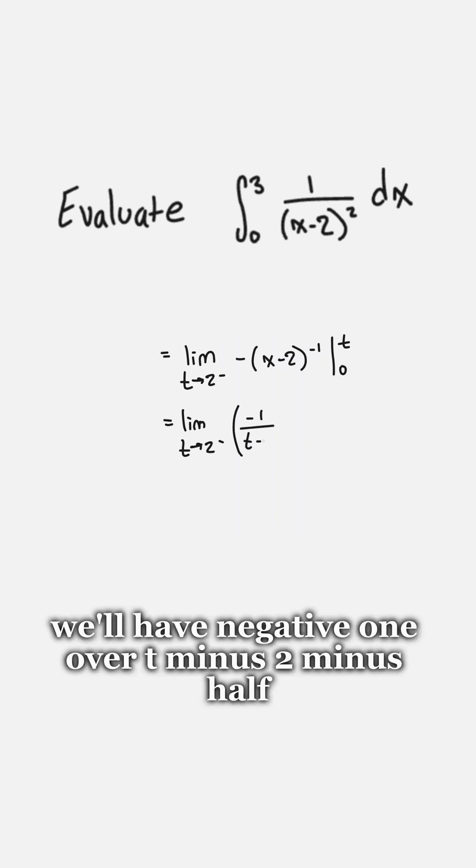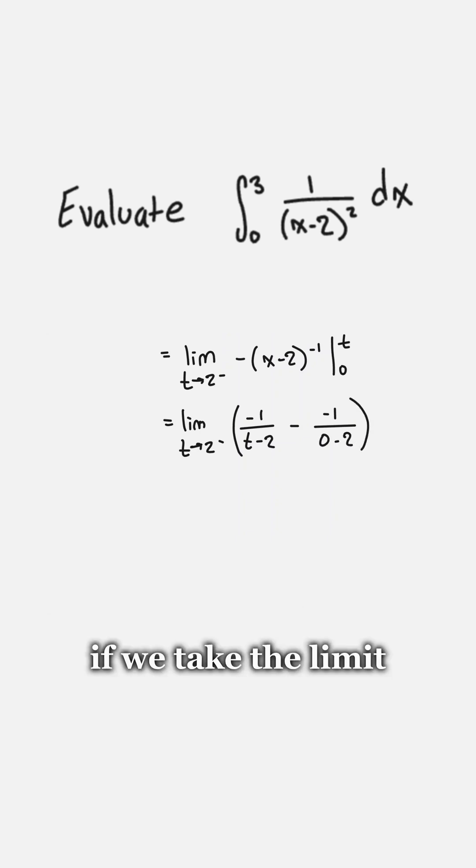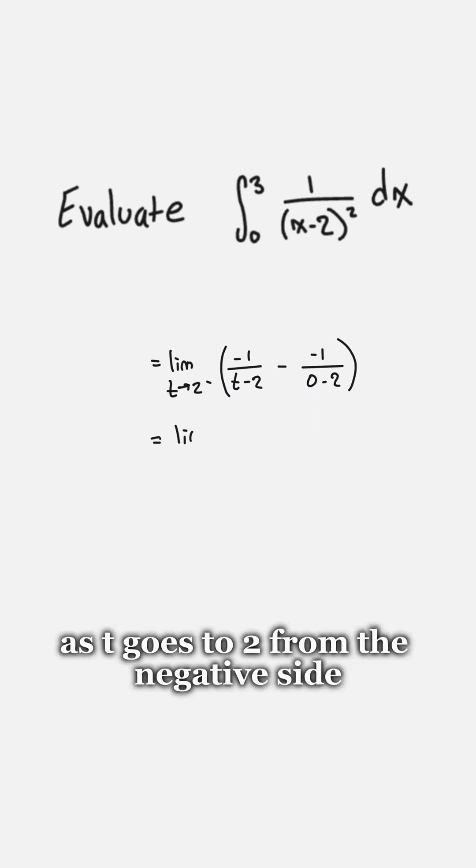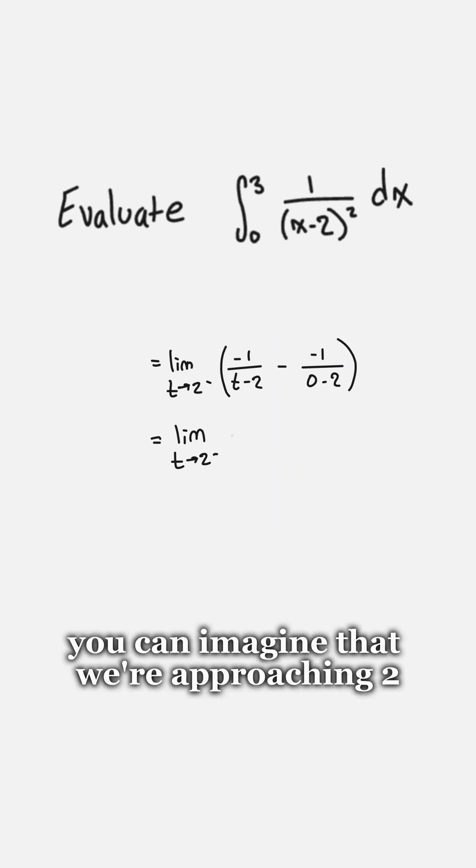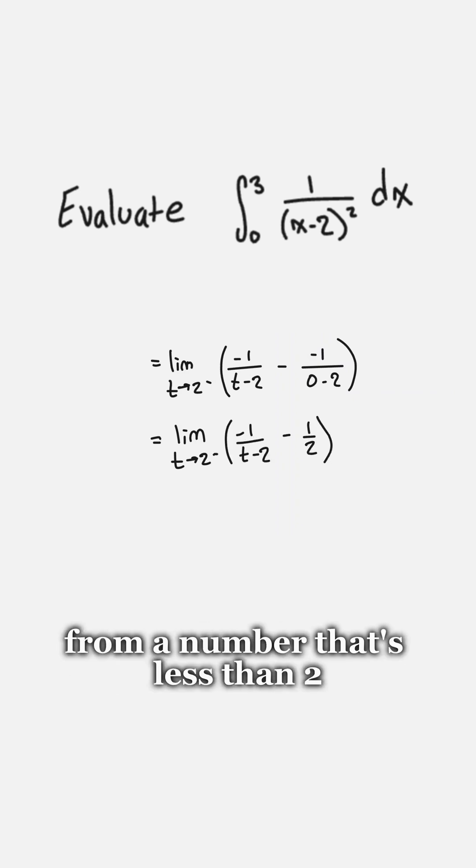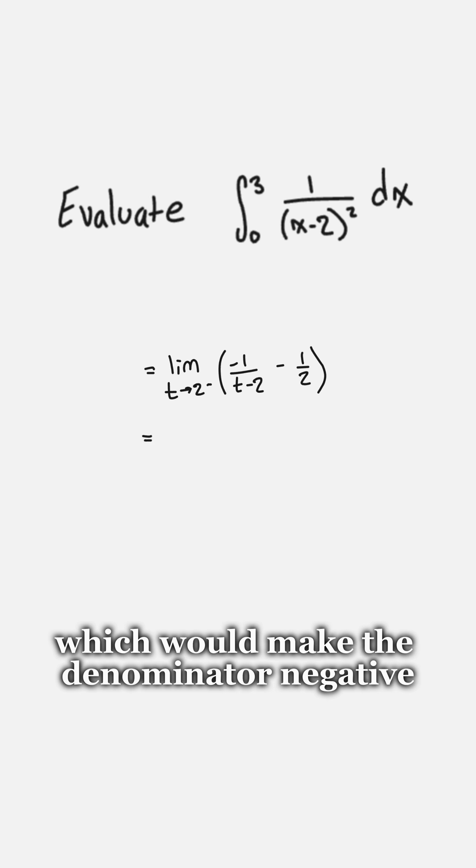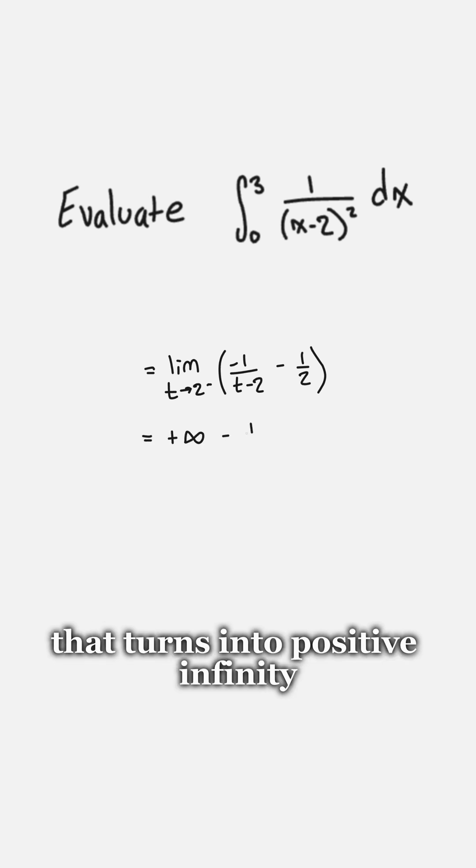Then once we clean that up we'll have negative 1 over t minus 2 minus 1 half, and if we take the limit as t goes to 2 from the negative side that means that you can imagine that we're approaching 2 from a number that's less than 2, which would make the denominator negative, that turns into positive infinity.